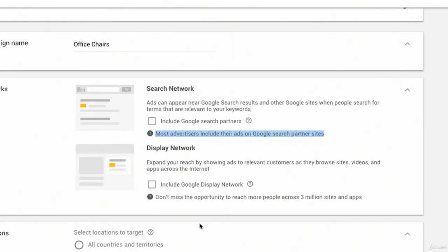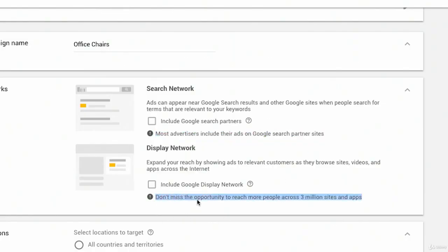Guess why? Guess why they want you to do that? Take a wild guess. They want you to spend more money. Google gets paid a commission every single time you click an ad on any of their search partner sites. So they're very interested in having you spend money on the Google search partner network. And down here, you have this nice little notification. Don't miss the opportunity to reach more people across 3 million sites and apps. Sounds so enticing. That's another way for Larry and Sergey to get your money.